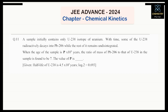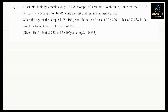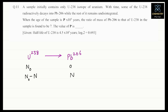We know that radioactive decay follows a first-order reaction. So first, write the reaction: U-238 decays to form Pb-206. Suppose the initial number of nuclides is N₀ at time zero, and after some time it becomes N₀ minus N remaining, while N nuclides have disintegrated.